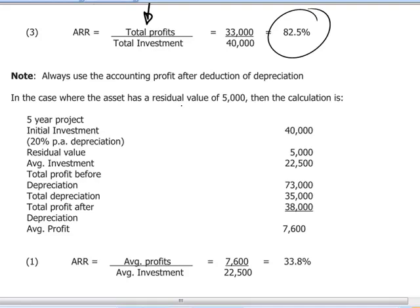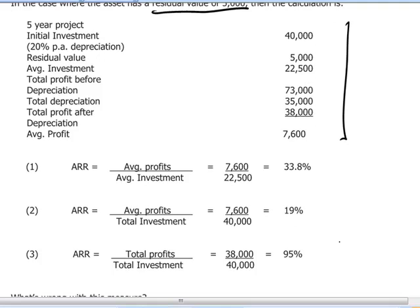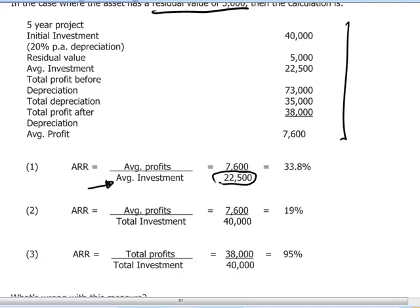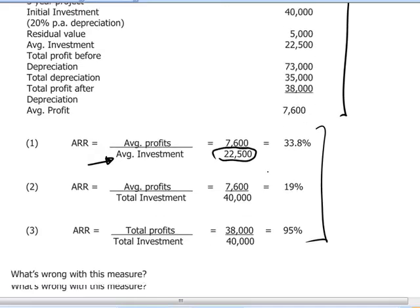If we have a residual value which appears in the underlying scenario, the recalculation of the accounting rate of return follows in this way. The average investment is now going to be different — a little bit higher than $20,000. And of course the depreciation amounts will be altered as well, because now we are depreciating not $40,000 over the life of the project but $35,000. These quantitative implications can be seen in the re-derived accounting rates of return.